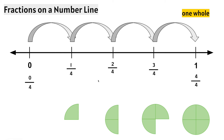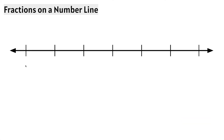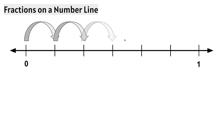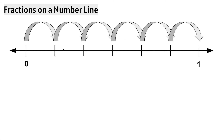It's the same concept, just on a number line. Let's try this number line. We're still working between the whole numbers 0 and 1. In order to figure out the fractions that go on these tick marks, we need to count how many equal sections there are between the whole numbers 0 and 1. Let's count: 1, 2, 3, 4, 5, 6. There are 6 equal sections between the 0 and the 1.